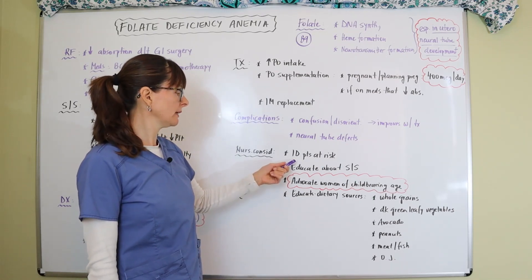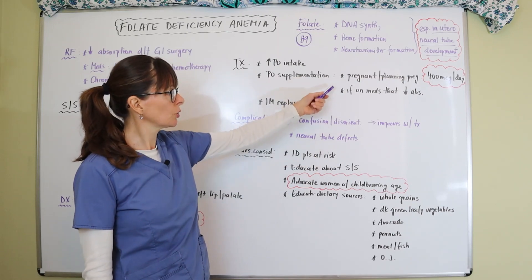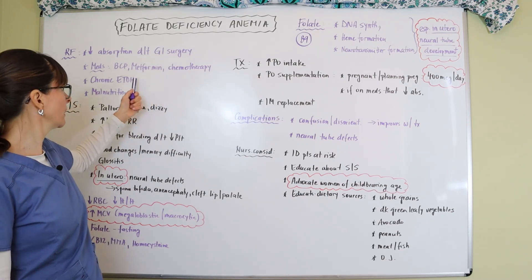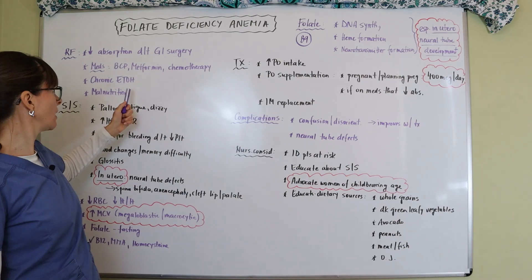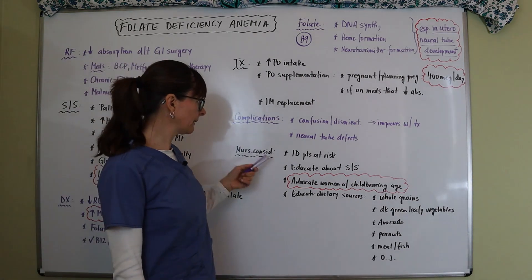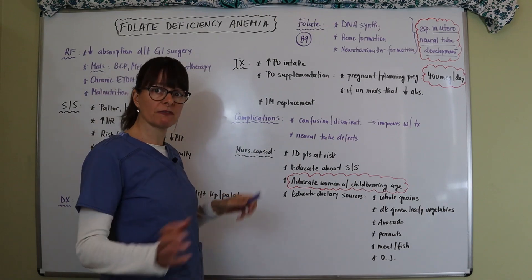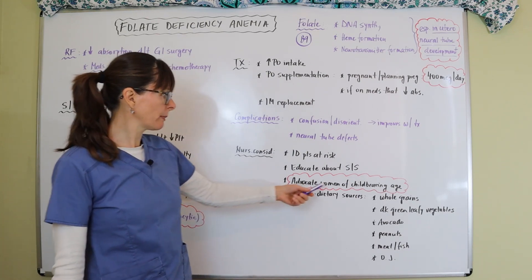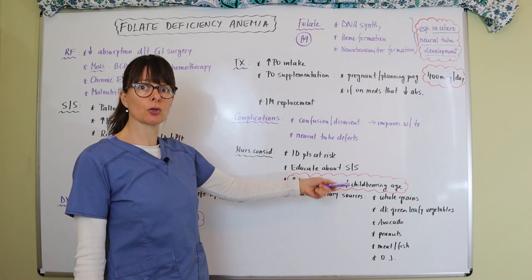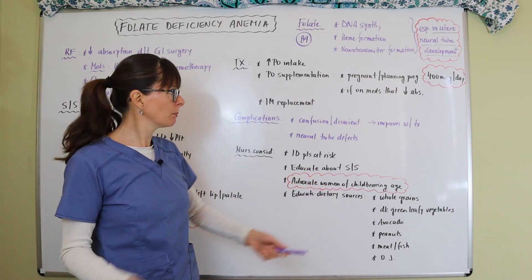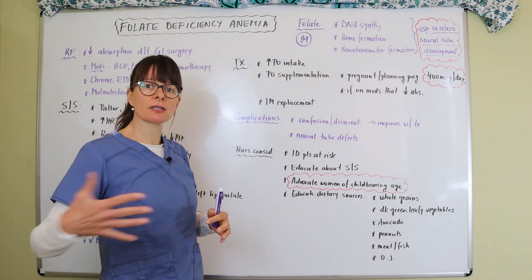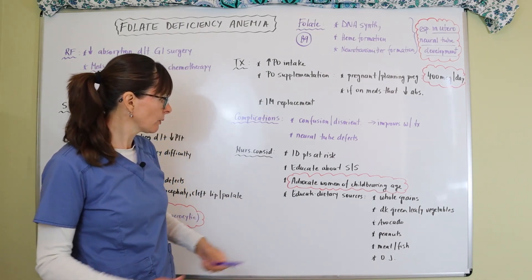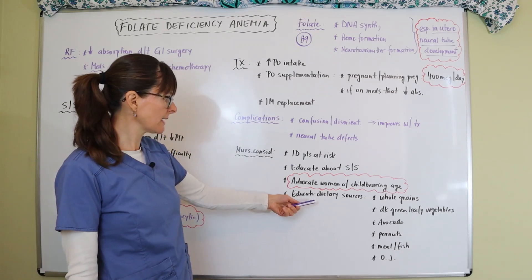For nursing considerations, we want to identify patients at risk — specifically those who are pregnant or planning to become pregnant, chemotherapy patients, patients with GI surgery, those on metformin, and those with chronic alcohol use or malnutrition. We want to educate them about signs and symptoms so they can advocate for themselves and request labs. We should also advocate for women of childbearing age who are not actively preventing pregnancy to take a folate supplement to prevent neural tube defects.